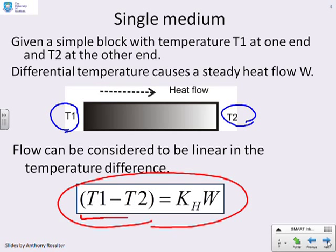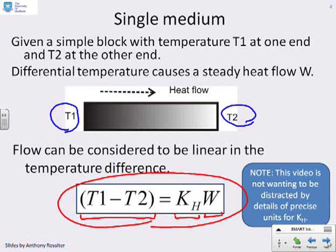So you see I've got temperature difference on the left, T1 minus T2 is some constant Kh times the heat flow W. Again, as in the previous video, we're not going to dwell too much on the details of the units because that will distract from the key concepts that we're trying to communicate.